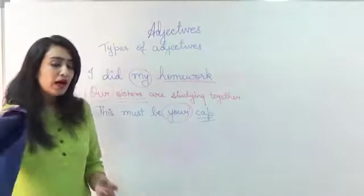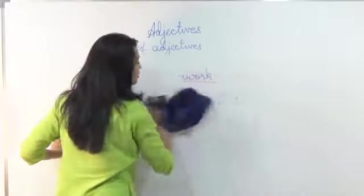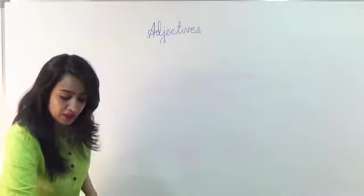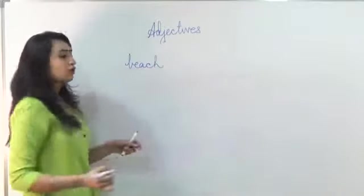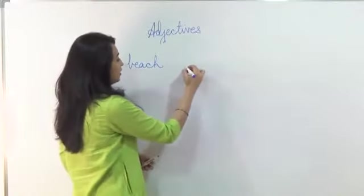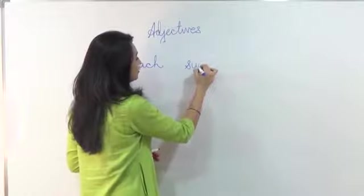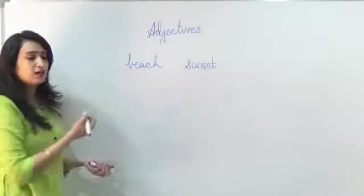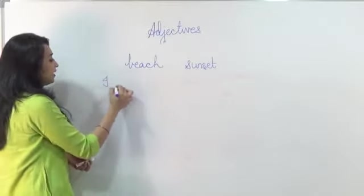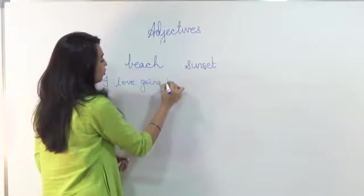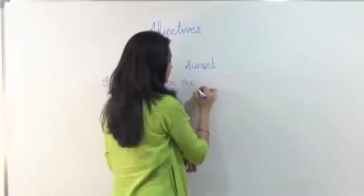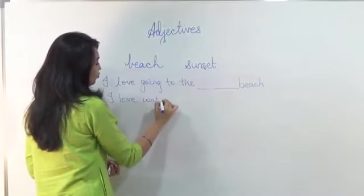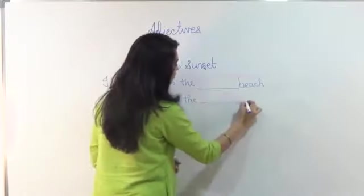Now I am going to give you two adjectives and you have to make a sentence using both of them. So for example if I give you the word beach, it is a noun, and I give you the word sunset. How will you use it in your sentence? I can say I love going to the beach.